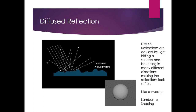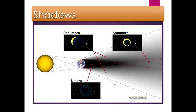A diffuse reflection is something like a Lambert material. Light rays come in but get scattered so much that they look soft. A good example is a cotton shirt — so many fibers going in so many different directions that it technically reflects light, but it happens in such an erratic and undetermined way that it just looks like a glow rather than a hot specular highlight. That's what a diffuse reflection looks like.